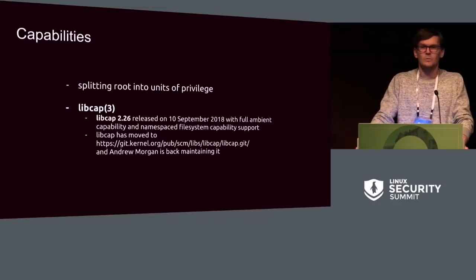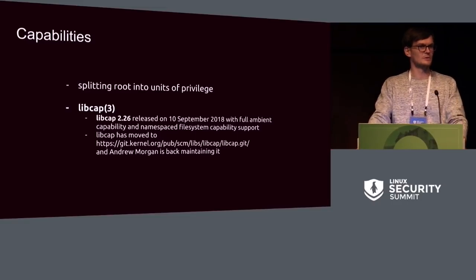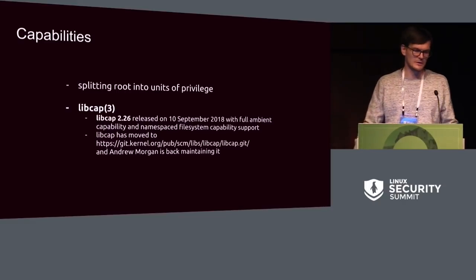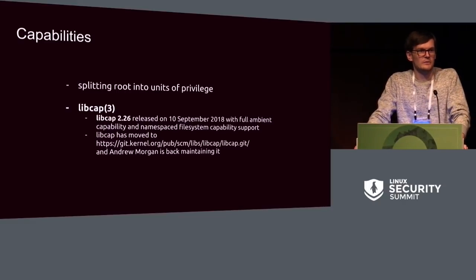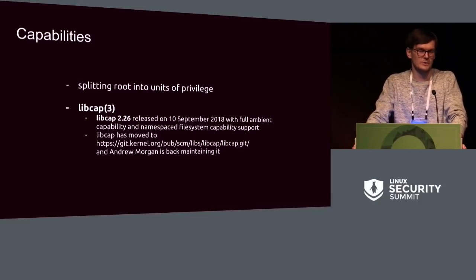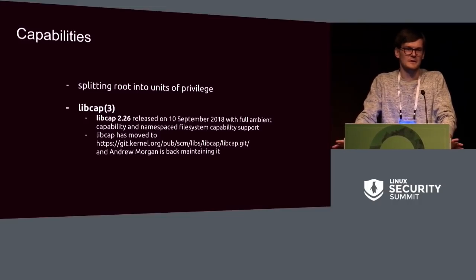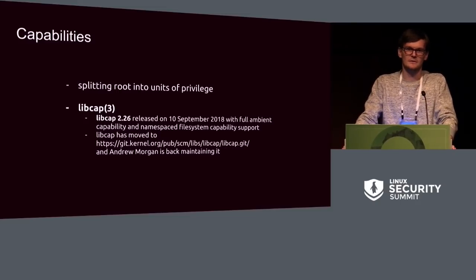A short introduction into what most people know about namespaces and capabilities. Capabilities are essentially a way to split the root privilege into distinct units of privilege, so that not just root can do anything — you can safely delegate certain types of privilege to unprivileged users. You have CAP_SYS_ADMIN, CAP_MAC_ADMIN, CAP_NET_ADMIN, and so on, and they all regulate certain types of things you can do.